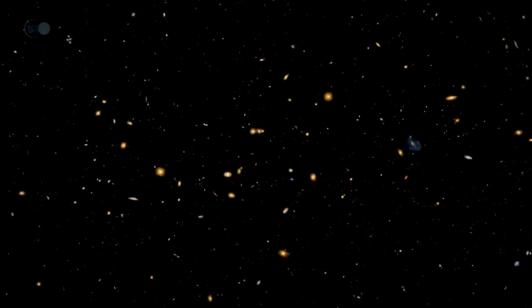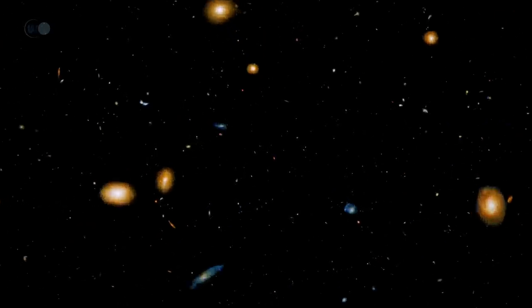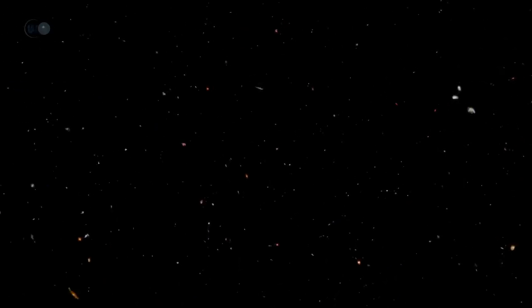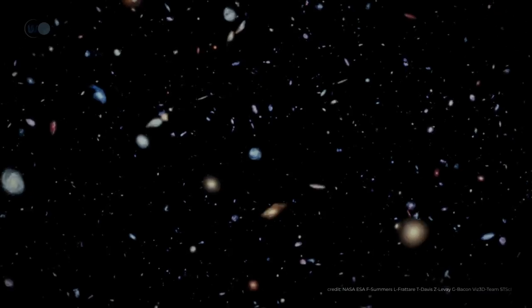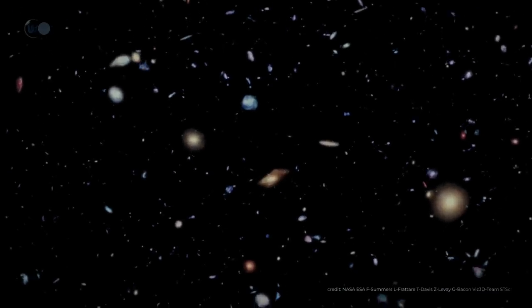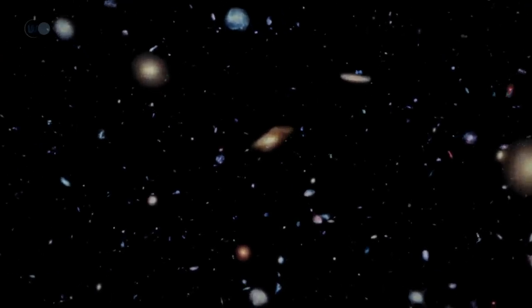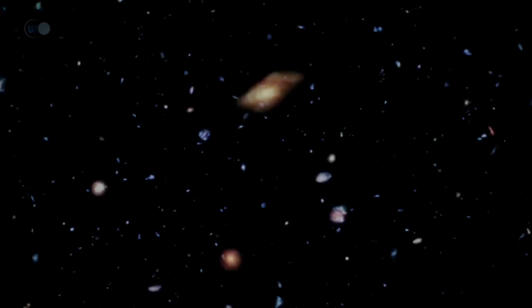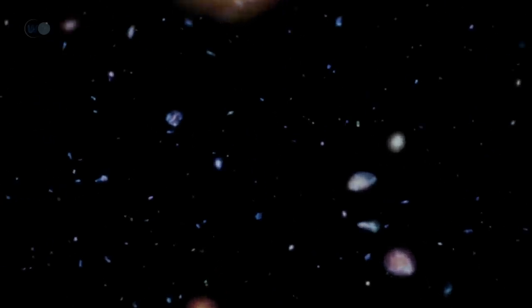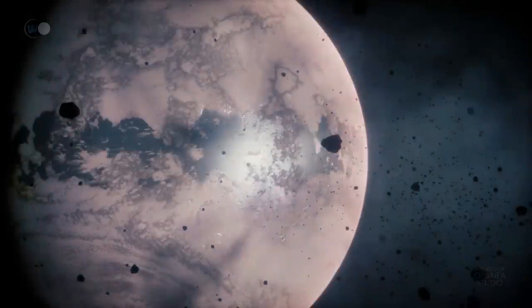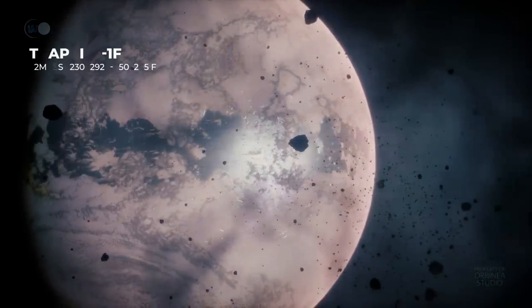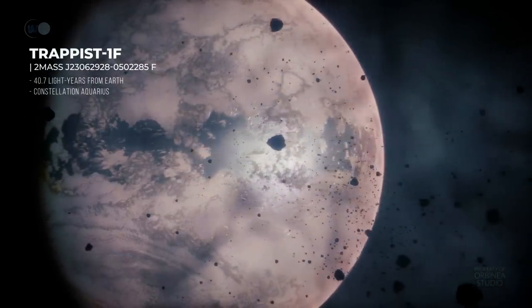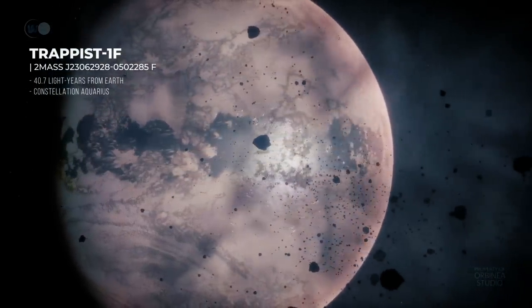However, the many planetary systems studied so far seem to demonstrate that this is not the case. Our solar system is just one of billions in our galaxy, all with very different configurations. Our solar system, for example, is devoid of super-Earths, which are relatively common in many other planetary systems.